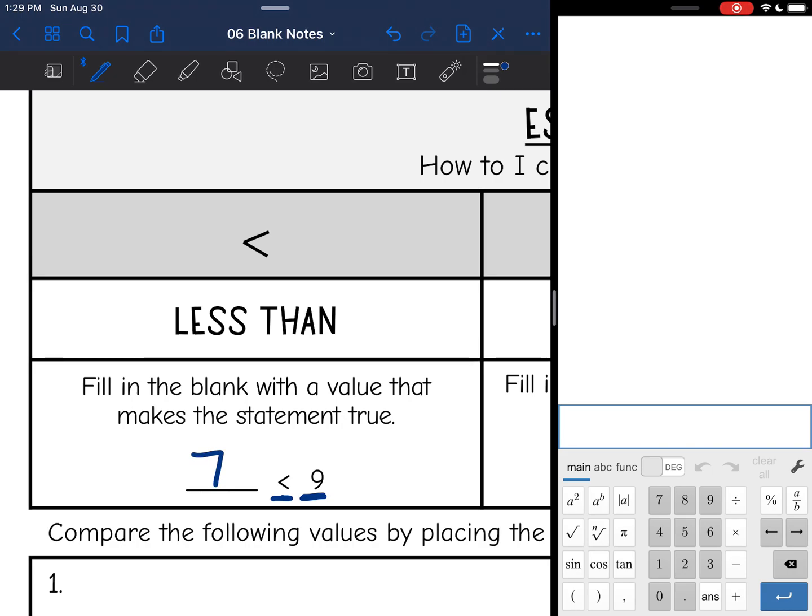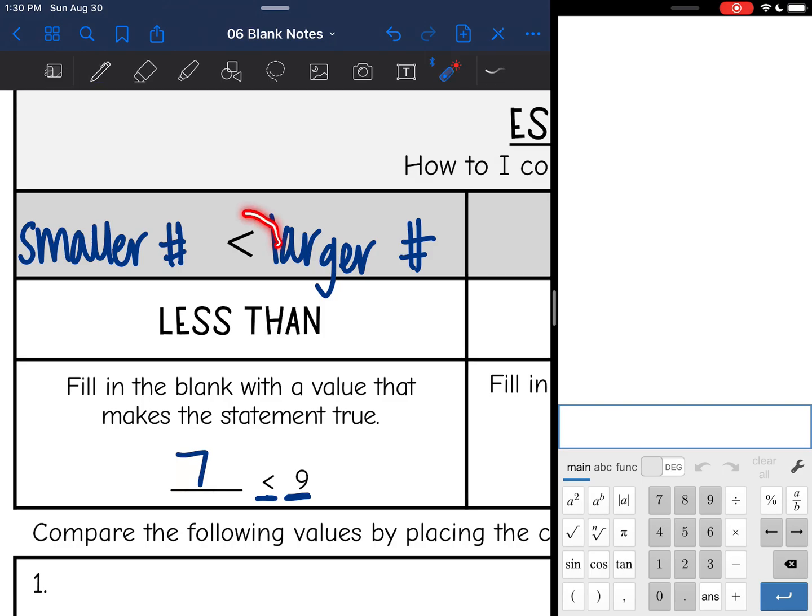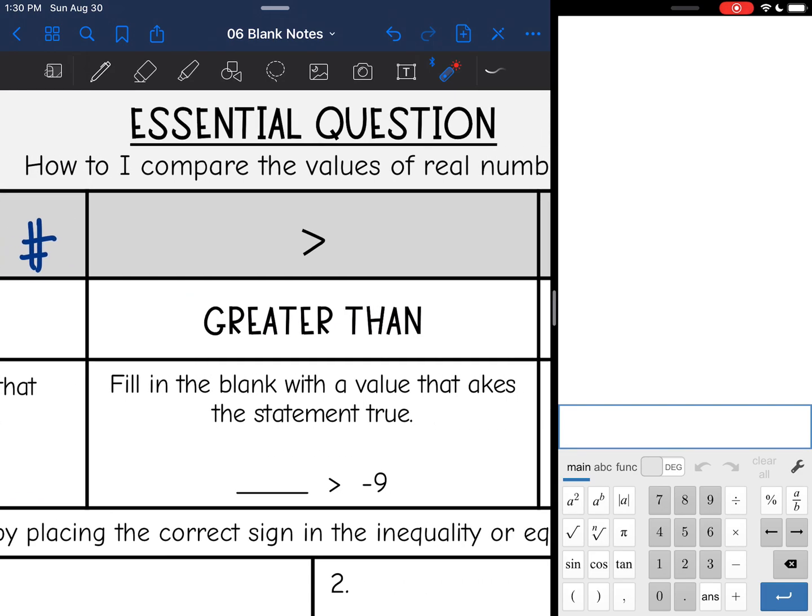So with your less than symbol, you have a smaller number on the left and you have a larger number on the right. And if you want to get super elementary about it, you can remember that the alligator wants to eat the larger number.